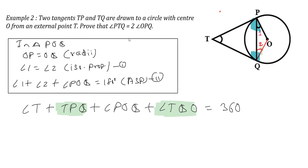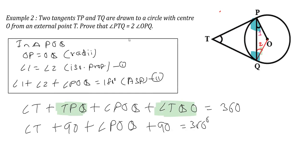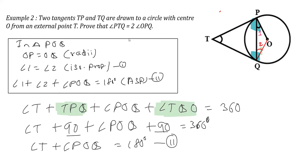So we can replace both the right-angle values with 90 degrees. That means if we write these two as 90 degrees, we get: angle T plus 90 plus angle POQ plus 90 is equal to 360 degrees. Therefore, angle T plus angle POQ equals 360 minus 180, which is 180 degrees. We mark this as equation 2.